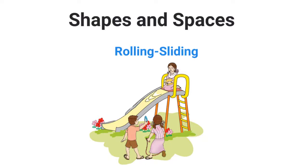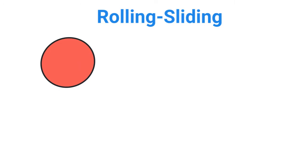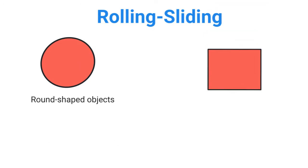Hey kids, today we're going to continue with the chapter Shapes and Spaces. In this chapter you will learn the difference between rolling and sliding. Some objects are round shaped, some objects are square shaped. Let's look at a video so we can see the difference between rolling and sliding.